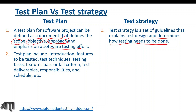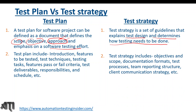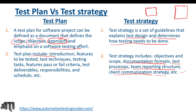A test plan includes introduction, features to be tested, test techniques, testing tasks, features pass or fail criteria, test deliverables, responsibilities, and schedule. A test strategy includes objective and scope, documentation formats, test processes, team reporting structure, and client communication strategy. Test strategy is at a higher, company level and can be used across various projects, whereas a test plan is project-specific.